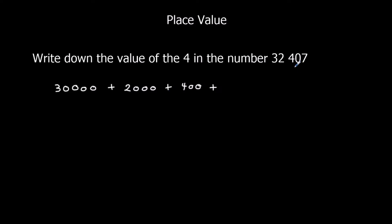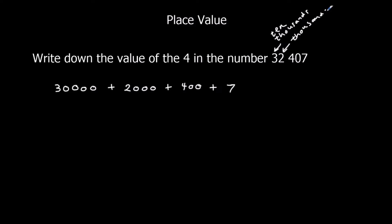There's nothing in the tens column so I'm going to leave that — I don't have to write anything. And I've got 7 in the ones column. So I've got 3 ten-thousands, 2 thousands, 4 hundreds, no tens, and 7 ones.